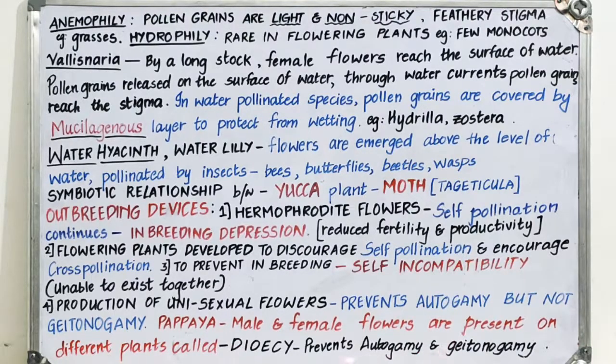Dioecious plants like papaya prevent both autogamy and geitonogamy. Thank you students for listening.